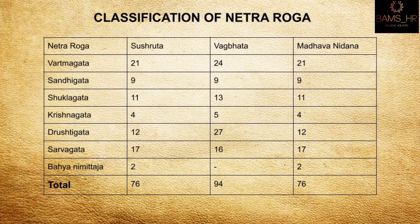According to Vagbhata there are 94 netrarugas. Looking at each category: vartma gatha — Sushruta and Madha Nidana say 21, Vagbhata says 24. Sandi gatha — 9 by all acharyas. Shukla gatha — 11 by Sushruta and Madha Nidana, 13 by Vagbhata. Krishna gatha — 4 by Sushruta and Madha Nidana, 5 by Vagbhata. Drishti gatha — 12 by Sushruta and Madha Nidana, 27 by Vagbhata. Sarva gatha — 17 by Madha Nidana and 16 by Vagbhata. Total: 76 by Sushruta and Madha Nidana, 94 by Vagbhata.